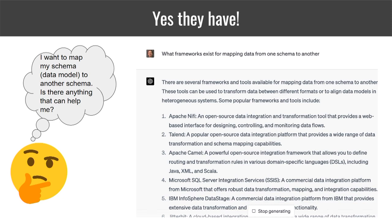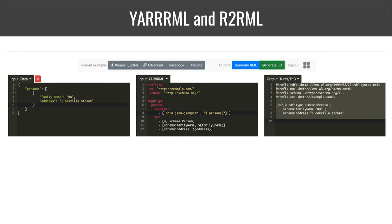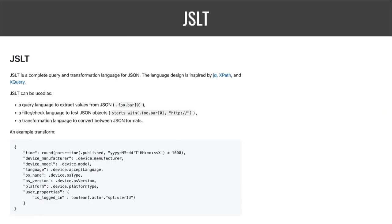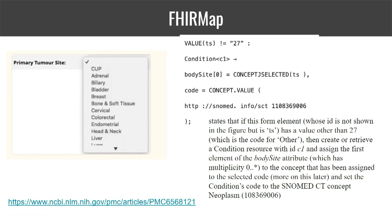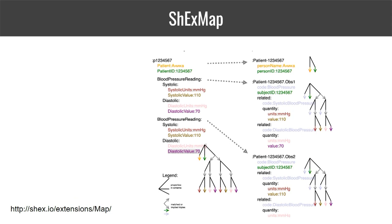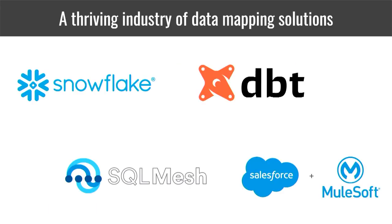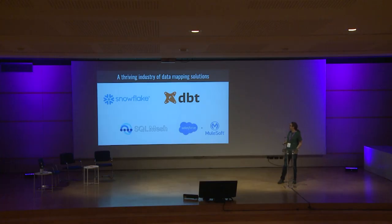There are roughly five different frameworks suggested for doing this kind of schema mapping, but that's only touching the surface. Many of us come from a semantic web background, so there's emphasis on things like YARML and R2RML. But in the JSON world there's JSLT; in the FHIR universe there's FHIRMap; in the ShEx universe there's ShExMap. And in fact there's an entire industry dedicated to this — if you want to run data transformations in the cloud, you can pay Salesforce a lot of money to do it.